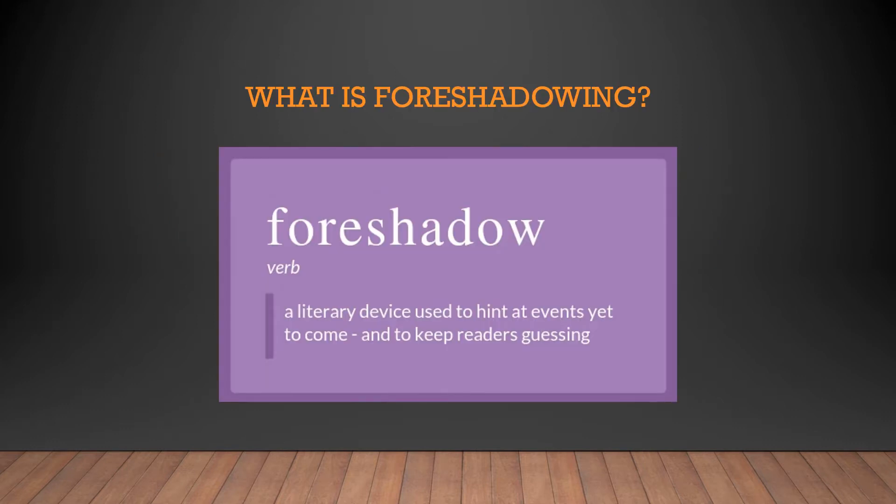So what is foreshadowing? Foreshadowing is one of the main dramatic techniques in Romeo and Juliet. It's a literary device used to hint at events that are yet to come, and to keep readers guessing. The lovers' tragic end is both directly and subtly foreshadowed from the very beginning of the play. This strong foreshadowing emphasises that the lovers' fate is inevitable, and that their sense of freedom is an illusion.